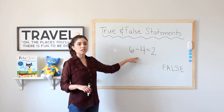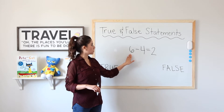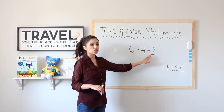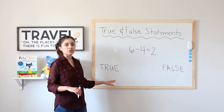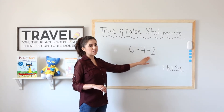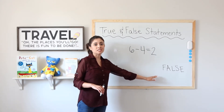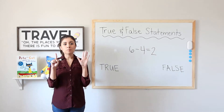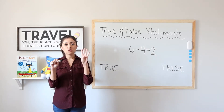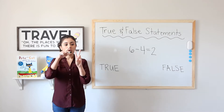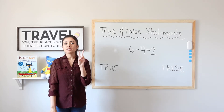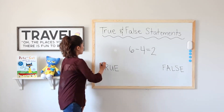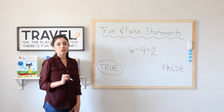6 minus 4 equals 2. I'm going to take 6 and subtract 4. If I get 2, my statement is true; if I get anything else, it's false. 6 fingers, put down 4 — 1, 2, 3, 4. I have 1, 2 left. 6 minus 4 is 2. That means my statement is true.